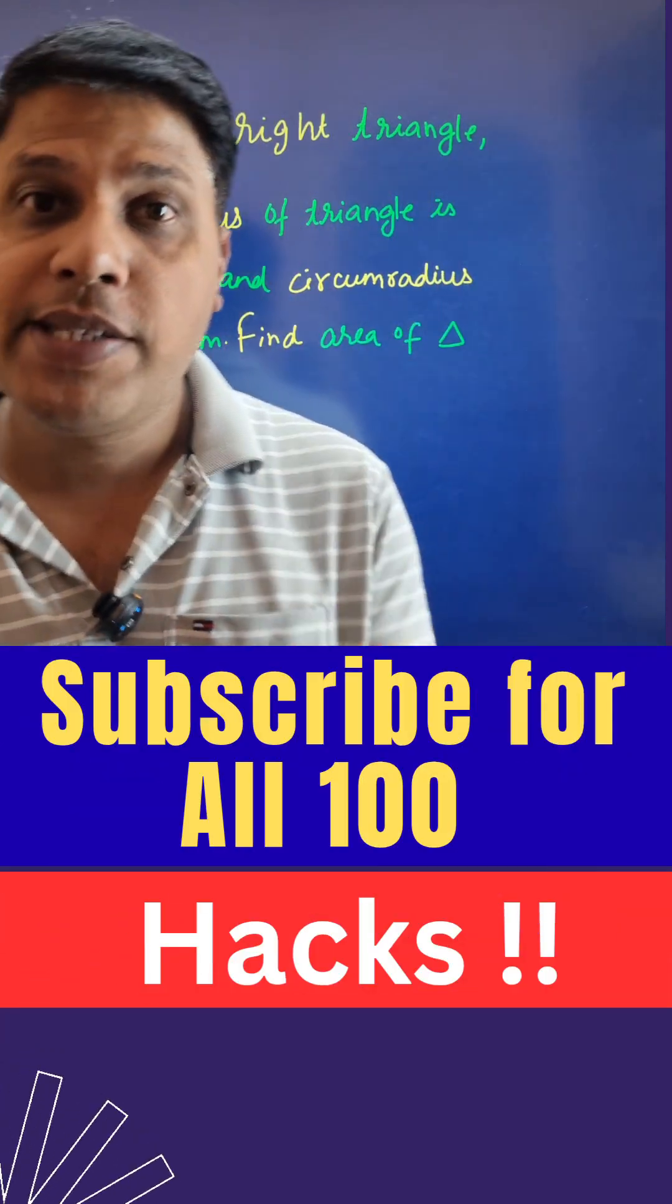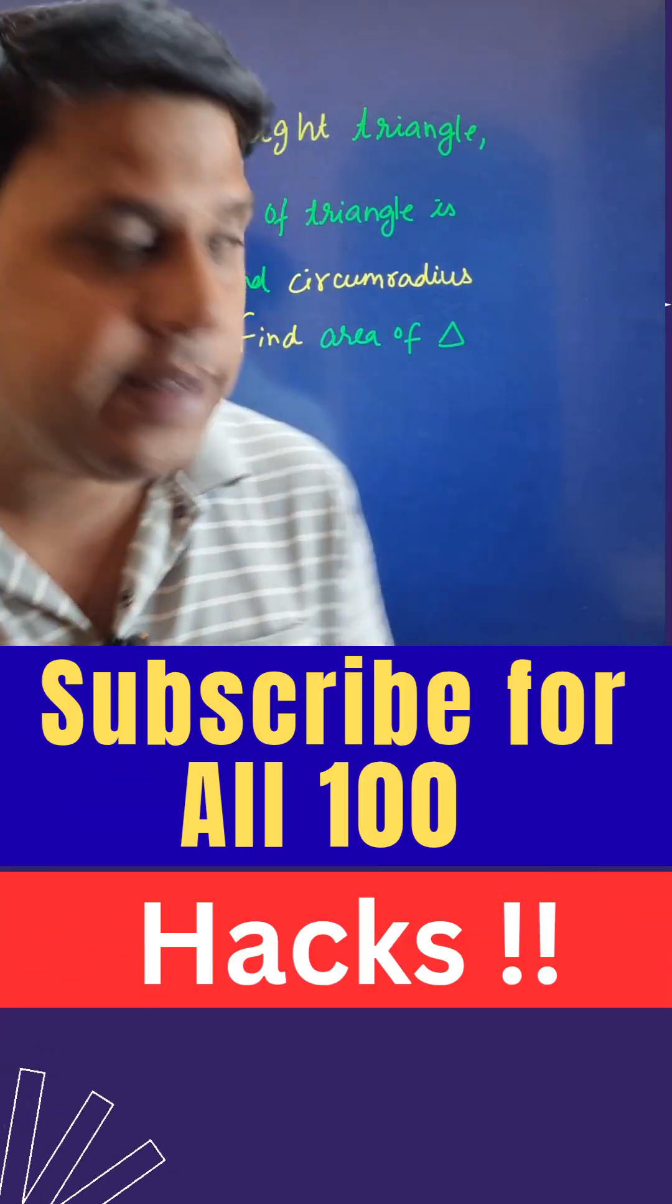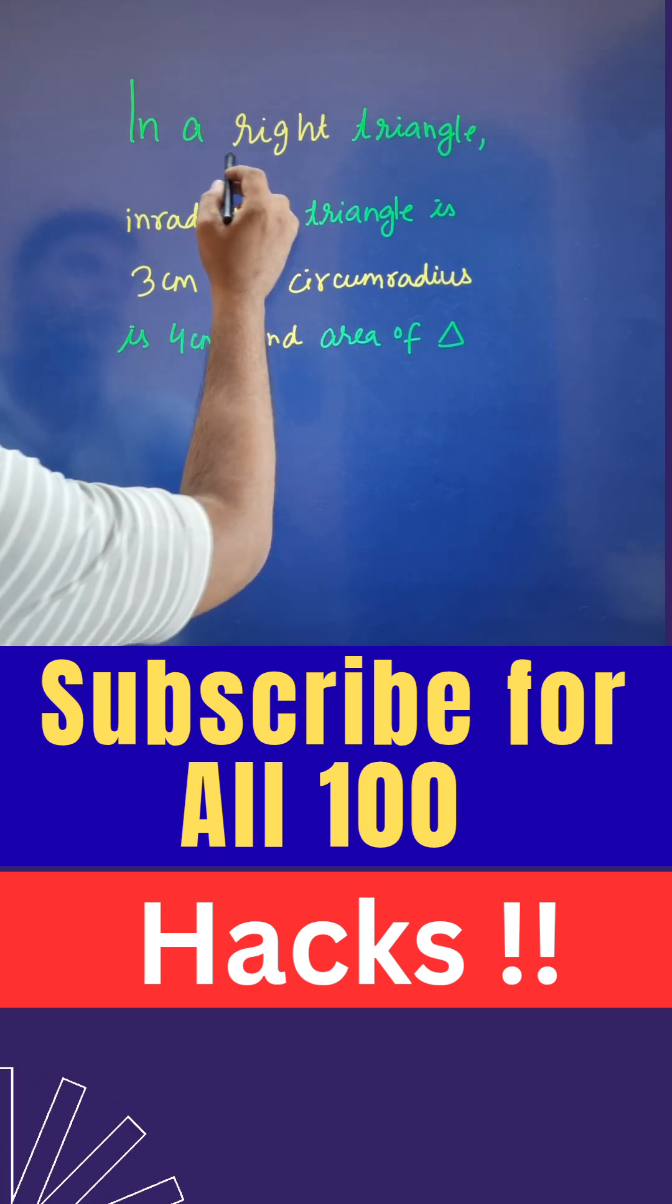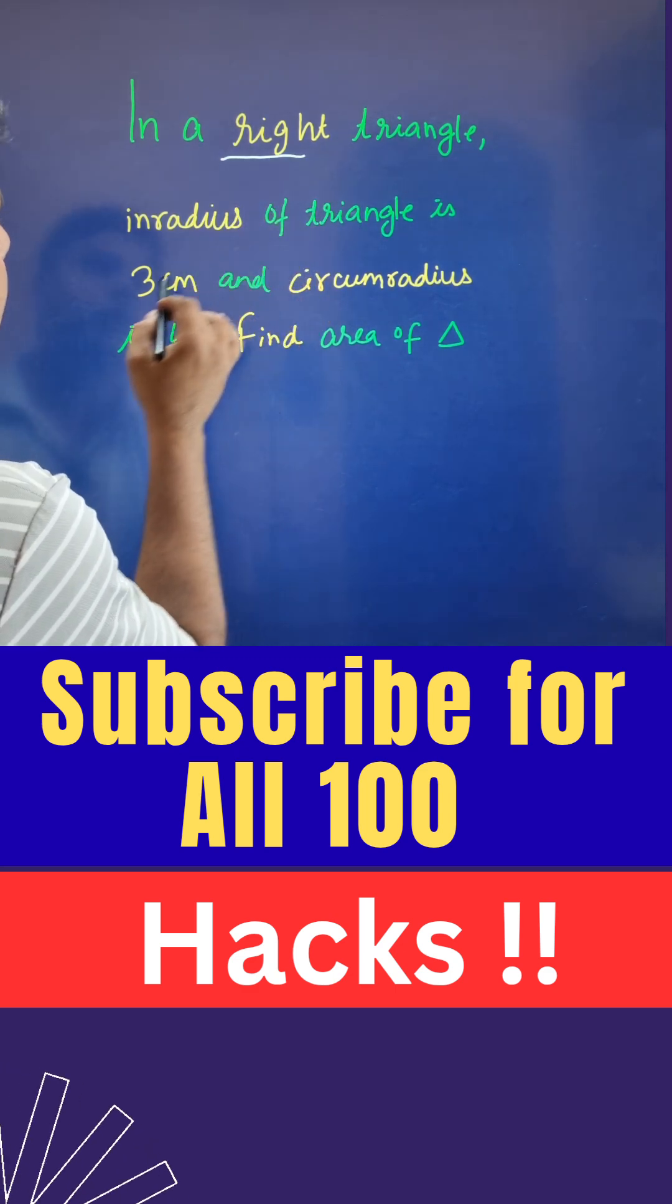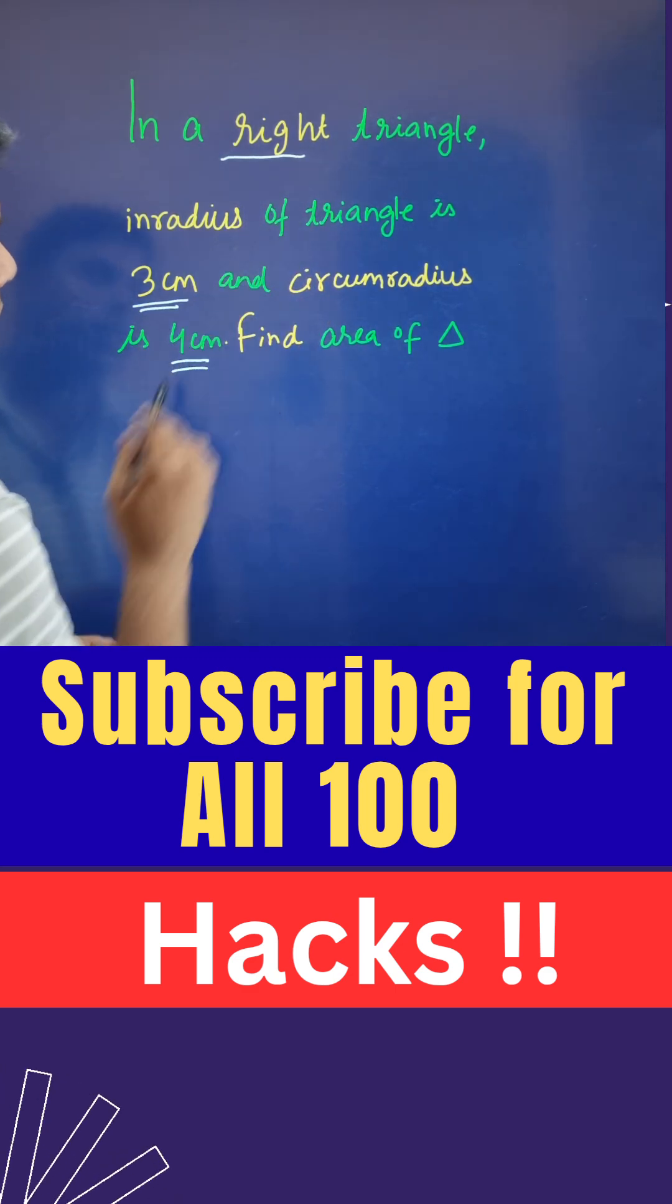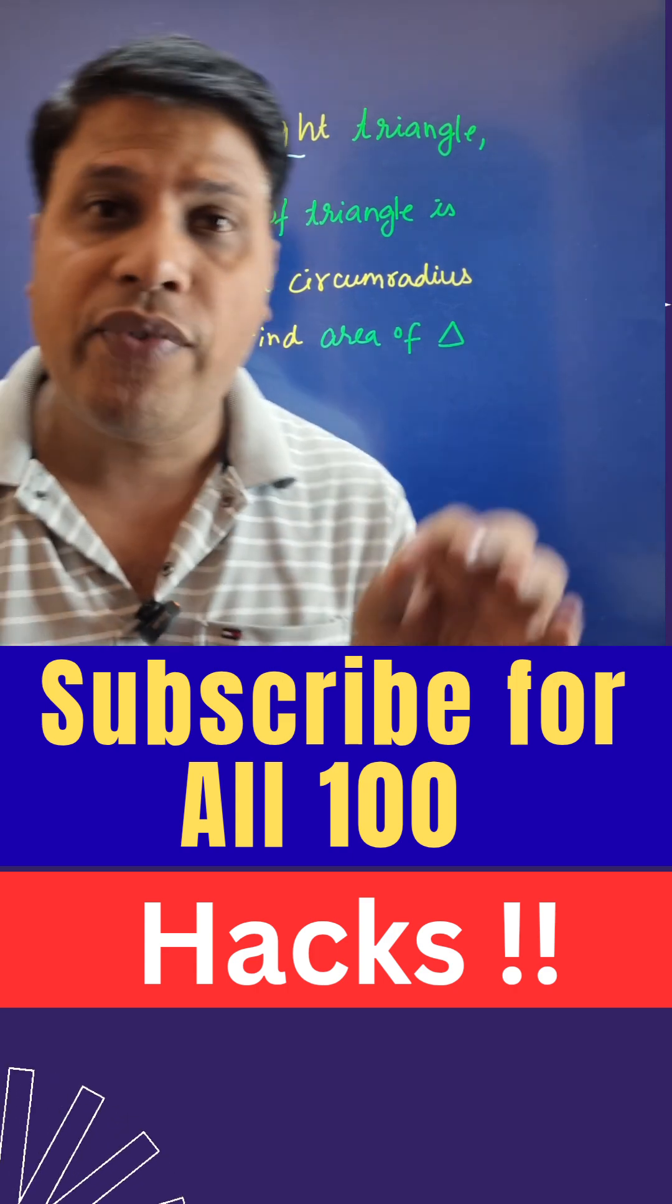Welcome to one more must-know 100 results short series. We have a question: in a right triangle, the inradius of the triangle is 3 centimeters and the circumradius is 4 centimeters. We have to find the area of the triangle.